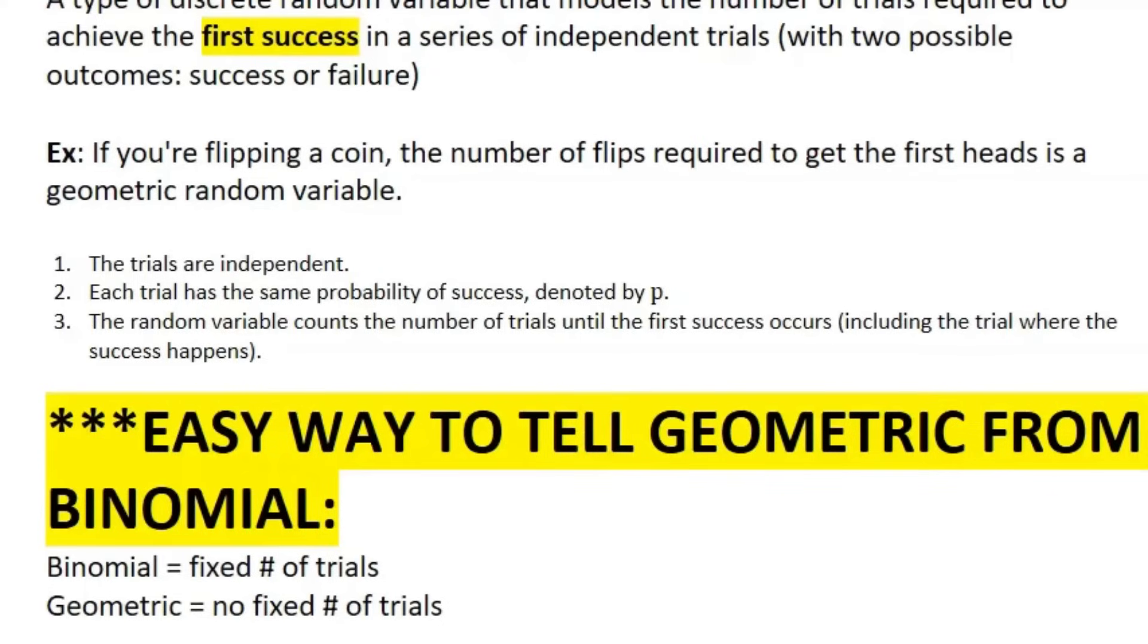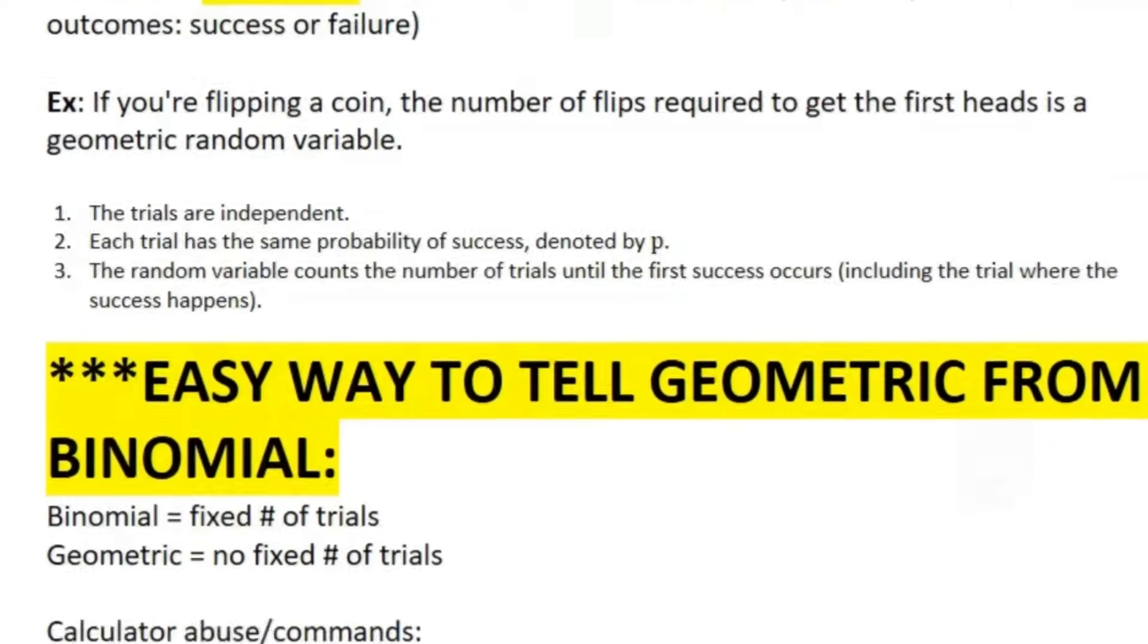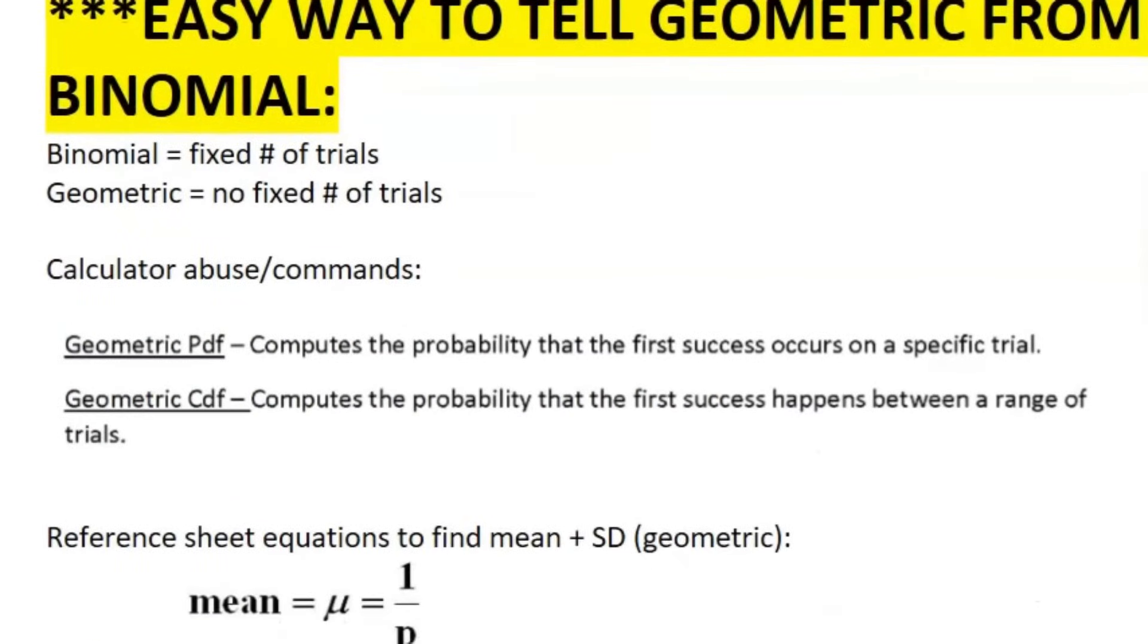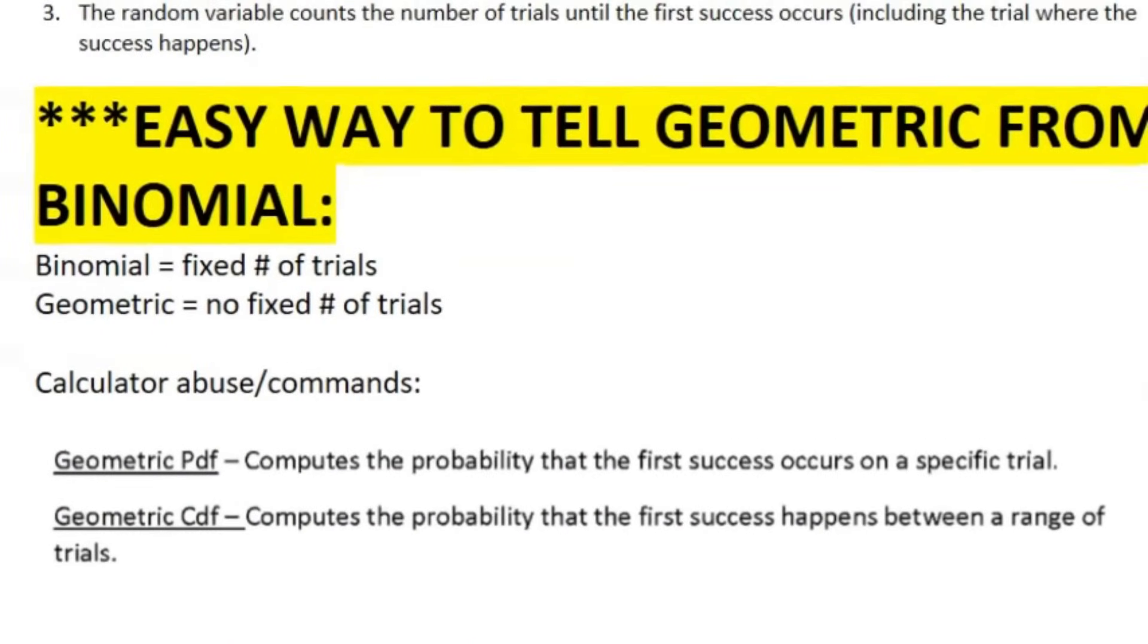Now easy way to tell geometric random variables from binomial random variables is the following. Binomial random variables have fixed number of trials. Geometrics do not have a fixed number of trials. So look out for the keyword until. More calculator abuse and commands, geometric PDF and geometric CDF. If there's one thing you learned today is learn how to use calculator commands because it makes your life pretty darn easy.